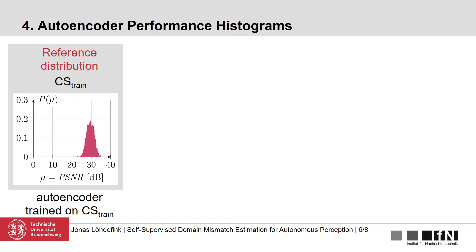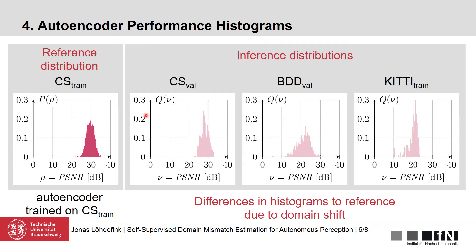Evaluating an autoencoder trained on Cityscapes on the Cityscapes train dataset, of course, yields a very smooth distribution, as we can see here on the left. This is our training and reference distribution for the Earthmovers distance later. This is different if we evaluate other datasets such as Cityscapes validation, Berkeley Deep Drive validation, and the KITTI train set, where we can see major differences in the mean and variance of the distributions, which are due to the domain shift.